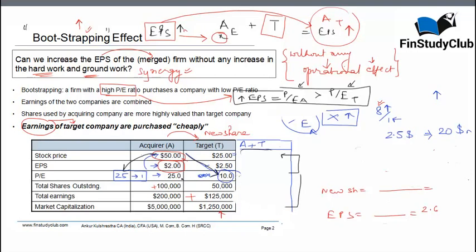I am taking a case where the PE multiple of the target is actually not 10 but 20. The stock price is not 25; now the stock price is 2.5 multiplied by the PE, which is 50. Therefore, the market cap is 50 times the total number of shares outstanding, 50,000, which is 2.5 million. By increasing the PE, the pre-merger PE of the target, all the fundamentals have changed in terms of the market price.